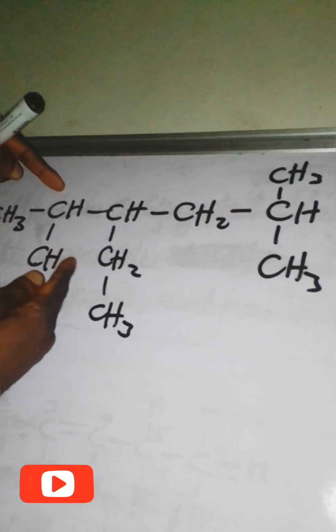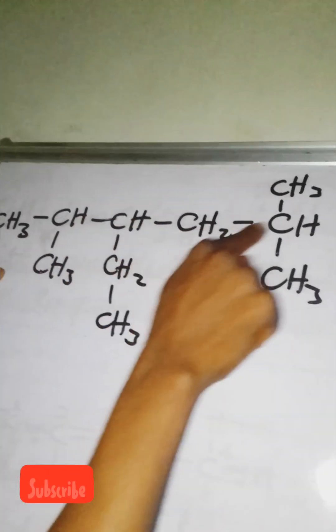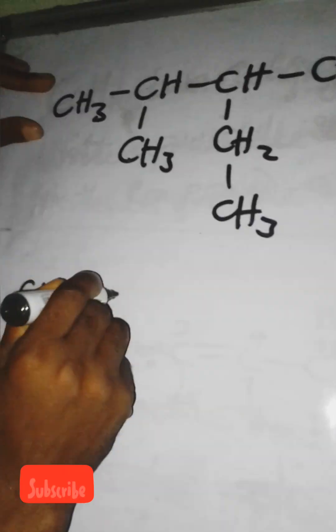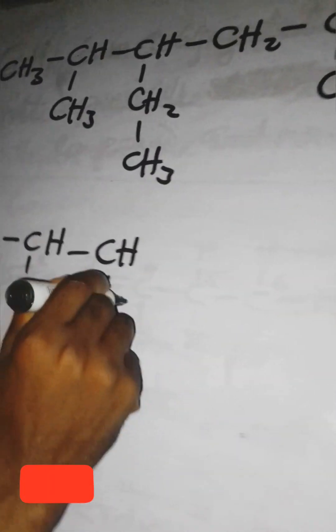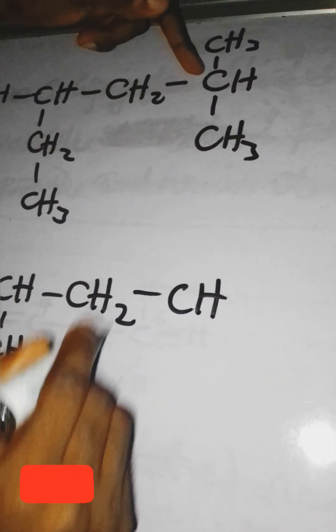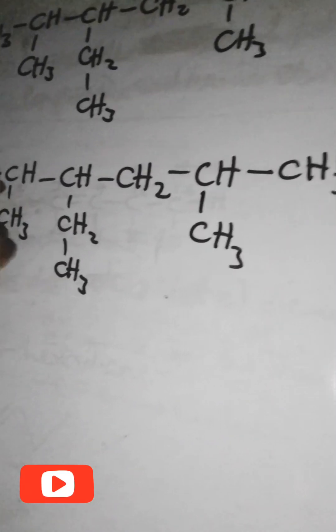We can't take a route that would give us an isopropyl branch, because there is no isopropyl here. Instead we take either this route or that route. Following this route: CH3, CH2, CH3, CH3, CH2, CH3, CH3, CH3, CH2, CH2. Continuing the chain and writing CH3 at the end, we get the longest possible chain: one, two, three, four, five, six.